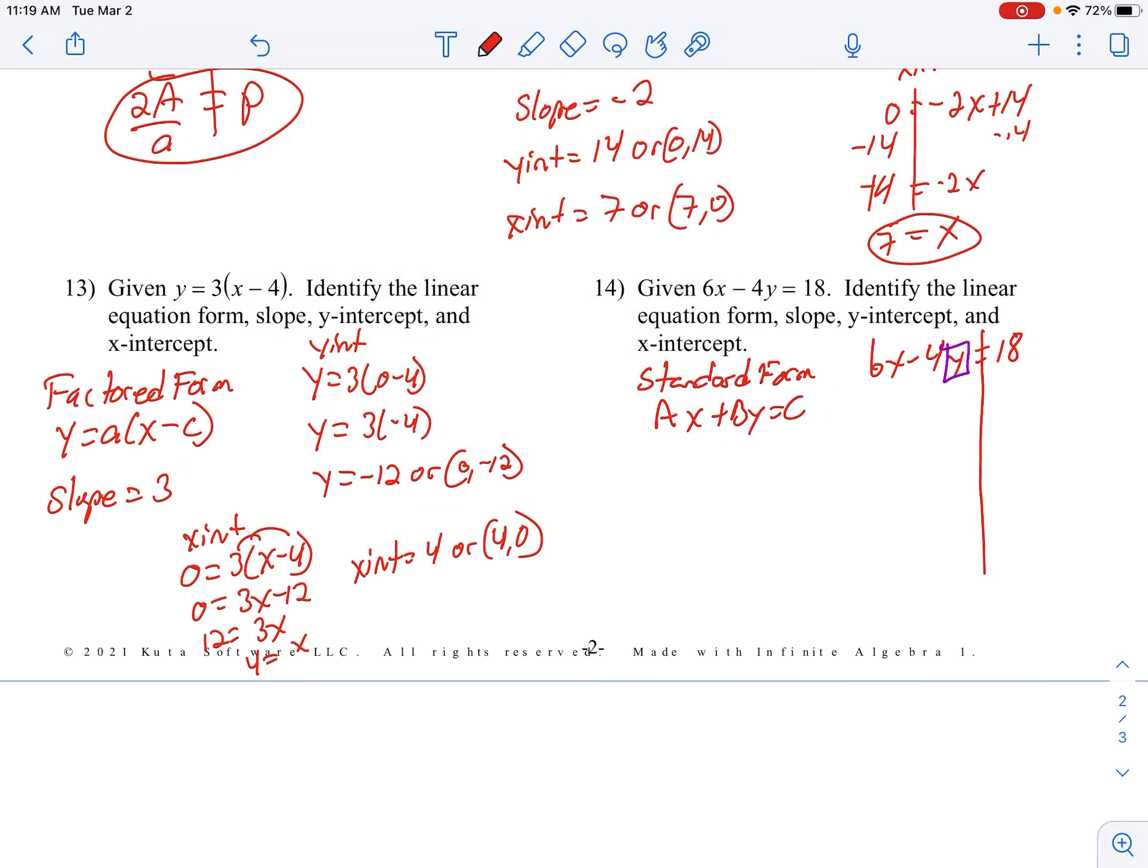So I want to solve for Y. Just like we've been doing, get Y by itself by subtracting 6X. Those are not like terms right there, so just go ahead and leave them separate.